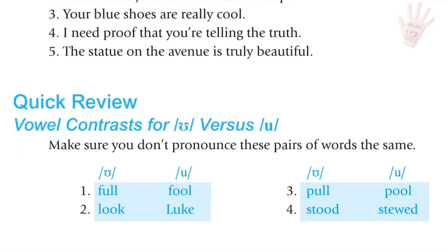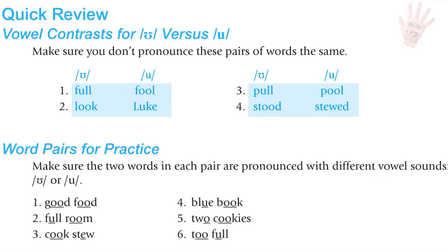Quick review — vowel contrasts for U and OO: full/fool, look/Luke, pull/pool, stood/stewed. Word combinations: good food, full room, cook stew, blue book, two cookies, too full.